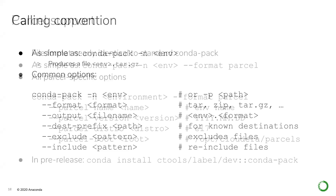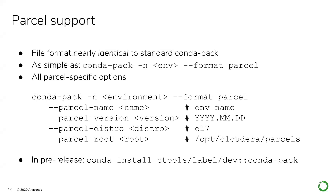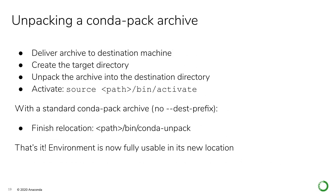If my exclude patterns are a bit too inclusive, I can use the include command to put more specific files back into the archive. For parcels, I use the --format parcel flag and there are some adjustments I can make — if you are building parcels, hopefully you know the parcel root directory and the parcel distribution, meaning the version of Linux on which your Cloudera cluster is installed, so you may need to adjust some of those optional settings. Unpacking a Conda Pack archive is relatively straightforward: move the archive to the destination machine, create the target directory, unpack the archive into that directory, activate, and if you're using normal mode run the conda-unpack script. The environment is then fully usable in the new location.